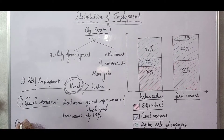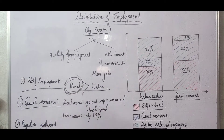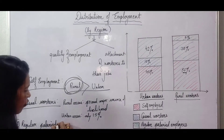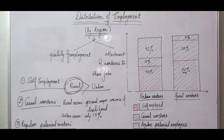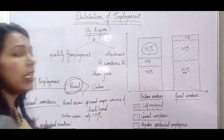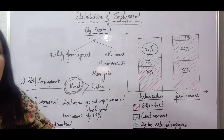Third, let's discuss regular salaried jobs. In urban areas, you can see that regular salaried jobs are the second major source of livelihood, at 42 percent. So in urban areas, what is the second major source of livelihood? Regular salaried jobs.